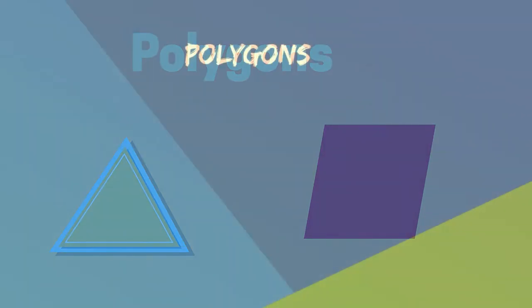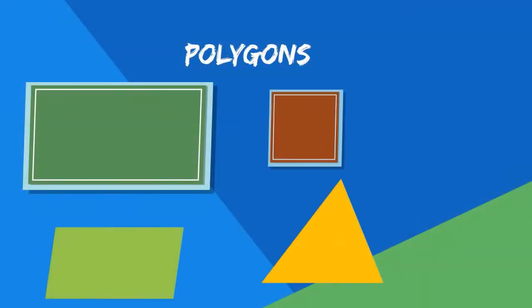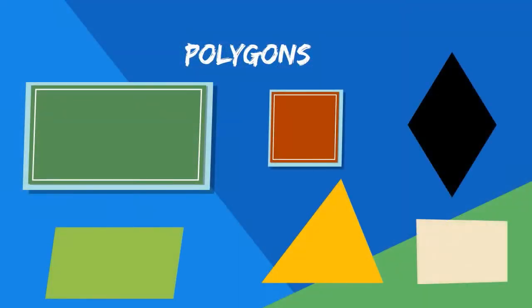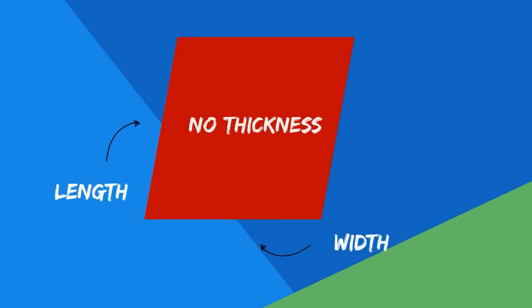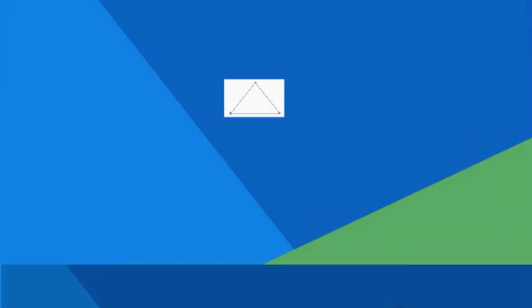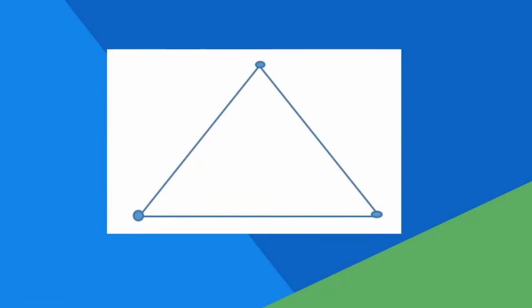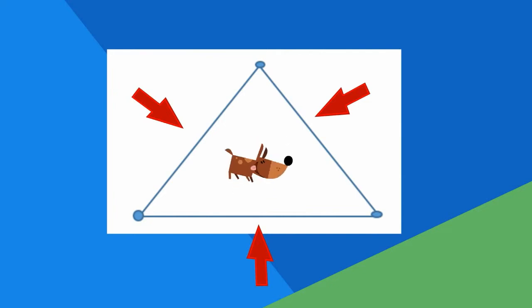Let's get started by looking at our first type of 2D shapes called polygons. Polygons are two-dimensional closed shapes. 2D shapes only have two dimensions, such as length and width, but no thickness. A closed shape does not have any openings and all of the lines connect. You can't leave the inside of a closed shape without crossing a line. Polygons have straight lines and do not have any curves.